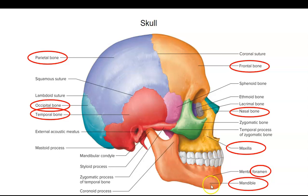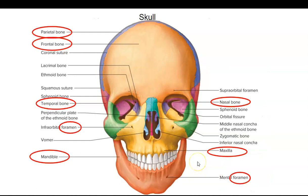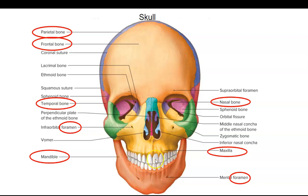And then I'm going to point out different openings along the way — this is a foramen. Here's another view of the skull; this is a frontal view. So here's the frontal bone. On the side, we have the two parietal bones in blue. Here's the temporal bone in red — you can see that just a little bit on either side. Here's the nasal bone, one on each side. And then here's a foramen, here's another foramen. And this is the mandible, and then the upper jaw is called the maxilla.